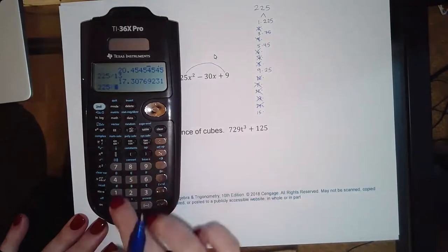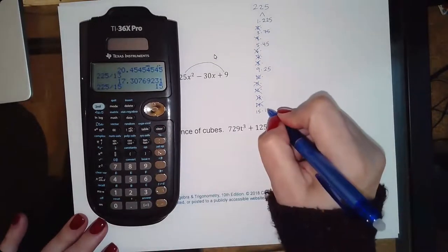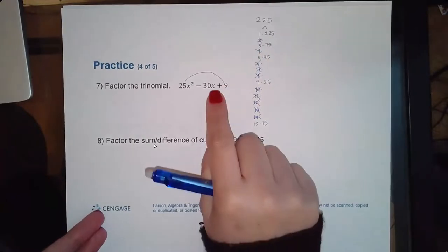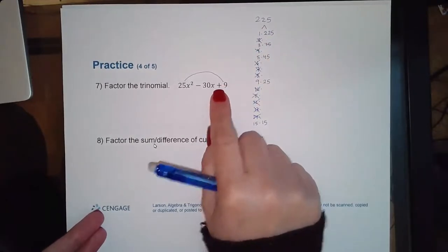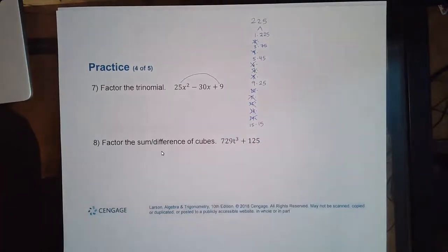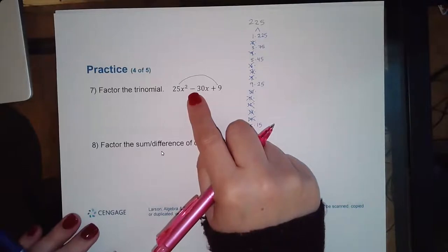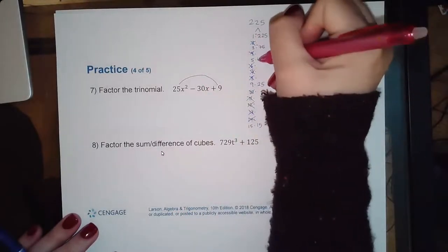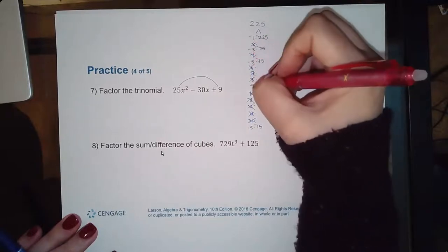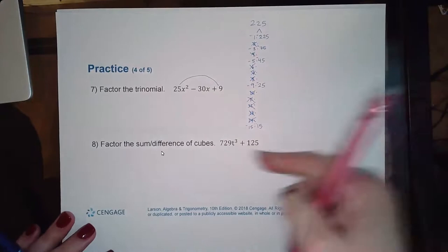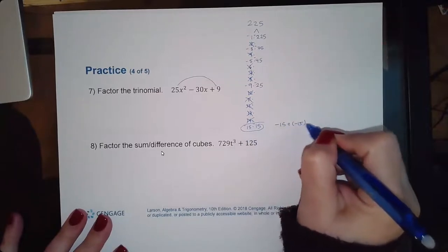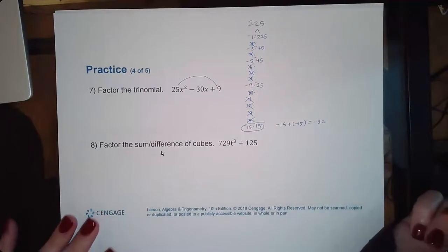Continuing: 225 divided by 11 is a decimal, divided by 13 is a decimal, and divided by 15 is 15. Since this is a positive times a positive giving positive 225, and the middle term is negative, both factors must be the same sign — and since the bigger one needs to be negative, both will be negative. Negative 15 plus negative 15 gives negative 30, so that's the pair.